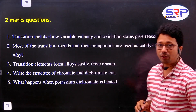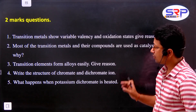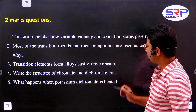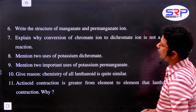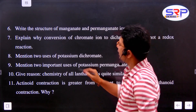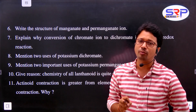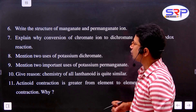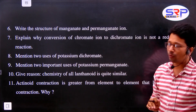Most transition metals and their compounds are used as catalysts - explain why. Transition elements form alloys easily - give reason: size is almost similar. Write the structure of chromate and dichromate ions. What happens when potassium dichromate is heated? Write the structure of manganate and permanganate ions. Explain why conversion of chromate to dichromate is not a redox reaction - because there is no change in oxidation state of chromium, so it is not a redox reaction.